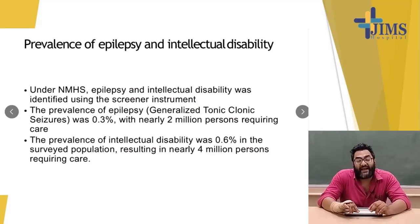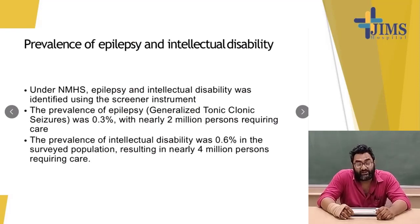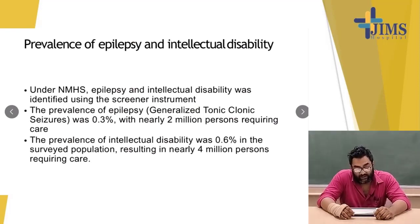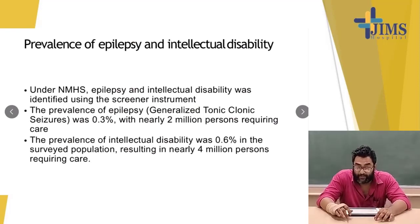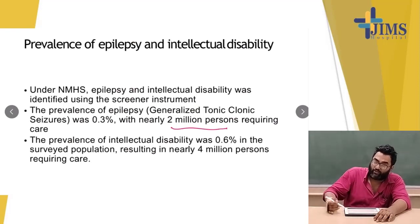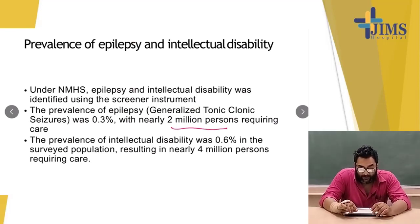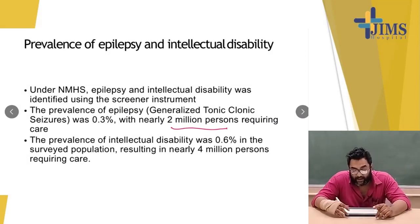Under the NMHS, epilepsy and intellectual disability were identified using screener instruments. The prevalence of epilepsy (generalized tonic-clonic seizures) was 0.3%, with nearly two million persons requiring care in India. The prevalence of intellectual disability was 0.6% in the surveyed population, resulting in nearly four million people requiring care.